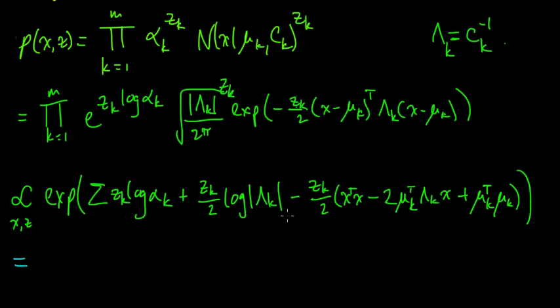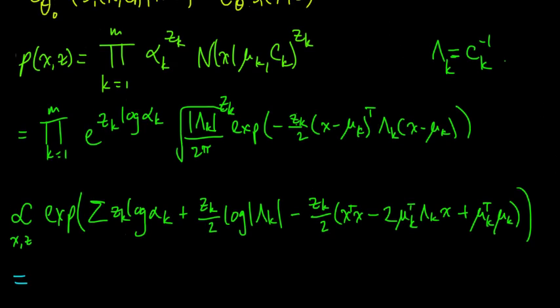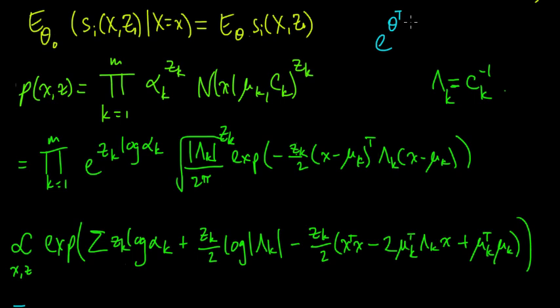Let's step back for a second and remember what we're trying to do. We're trying to get it to look like the form of an exponential family, which is e to the theta transpose s(x,z) times h(x,z) divided by some normalizing constant. We want to get this exponent to look like a dot product between parameters, some function g of theta, some vector valued function, and some functions of x and z only.